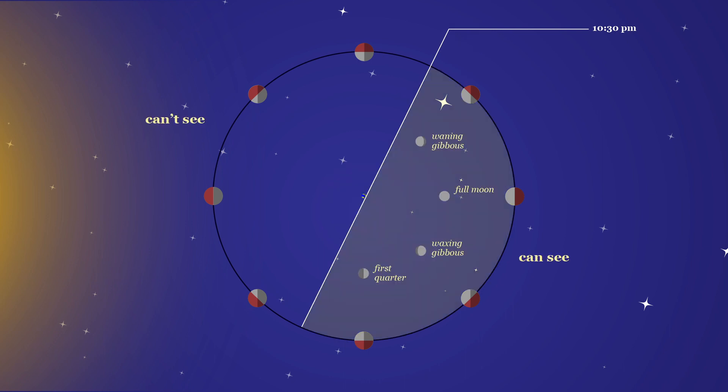We note the position of the lunar orbit our observer can see and the portion he can't see due to Earth. At 10:30 p.m., on the realistically-sized Earth, we note that the first quarter, waxing gibbous, full moon, and waning gibbous can be seen,